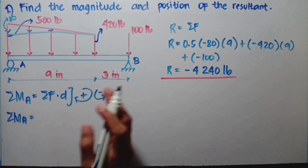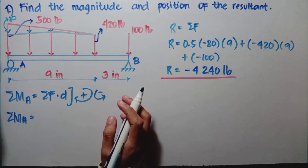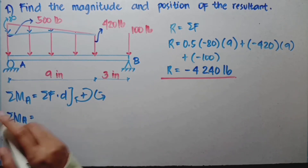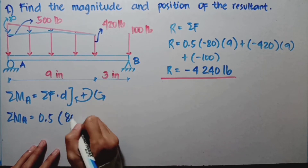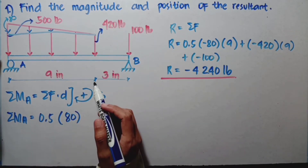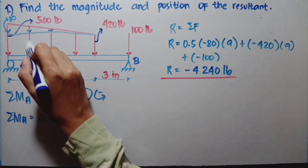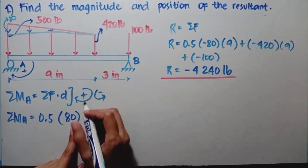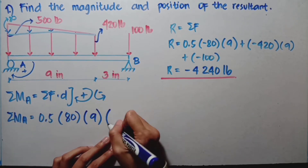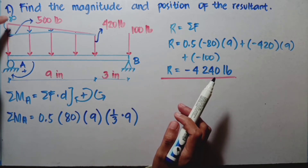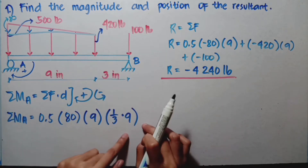As we did before, we split this into two types of force: the triangular load and the uniform load. Let's consider the triangular load first. For the triangular load: 0.5 times 80 — since 80 is the triangular portion and its rotation is clockwise toward A, so positive — times 9 for its length, times one-third of its distance or length. We take one-third because we are taking the moment at the very tip of the triangular load, and since the length is 9, we use one-third of 9.